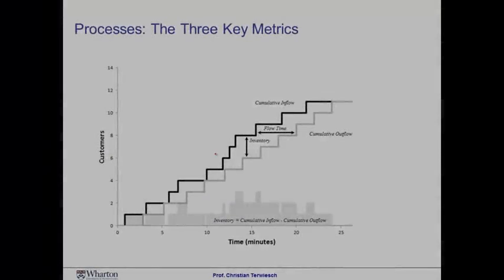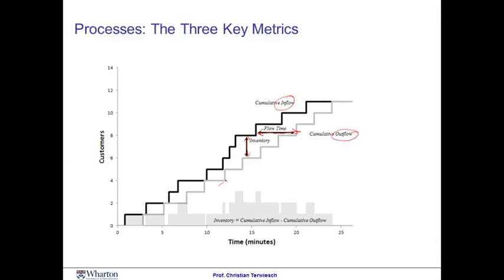To see the intuition behind Little's Law, let's take another look at some of the analysis we've done in an earlier session on the Subway restaurant. Remember how we were sitting in front of the Subway restaurant, keeping track of the inflow of customers as well as the outflow. We refer to the vertical difference between these graphs as the inventory — the number of customers in the system — and the horizontal difference as the flow time, how long a specific customer stayed in the restaurant. If we smooth these graphs a little bit, the slope of this line corresponds to the flow rate, namely the rate at which customers come in and go out of the restaurant.